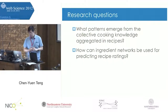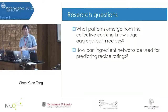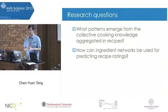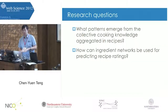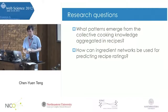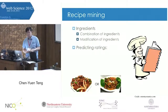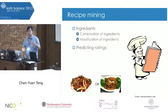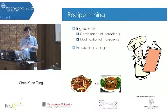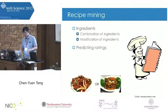Now we want to ask two big research questions. The first is: can we identify any patterns, or distill any cooking knowledge from online recipe sites? The second is: given ingredient information, can we aggregate it as an ingredient network to predict recipe ratings? Here is the framework — we build a complement network modeling ingredient combinations, and a substitute network modeling the substitutability of ingredients, then use this information to predict recipe ratings.